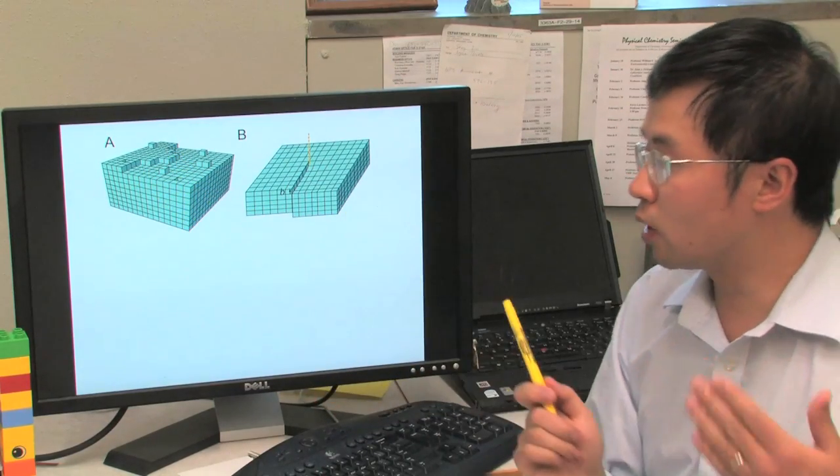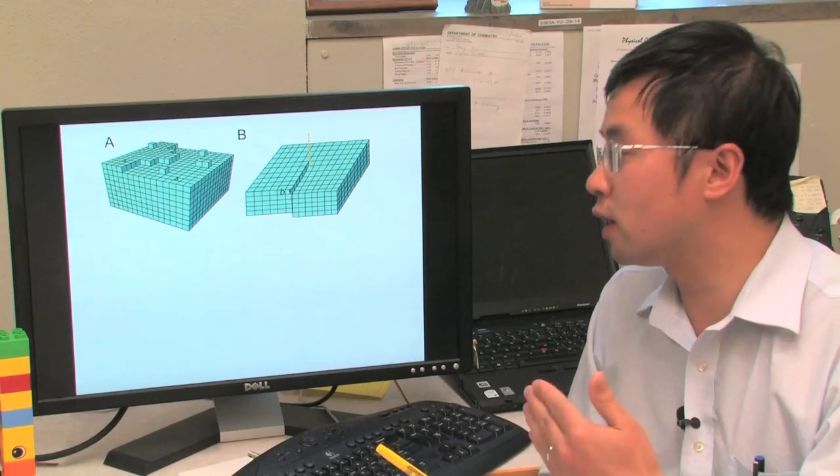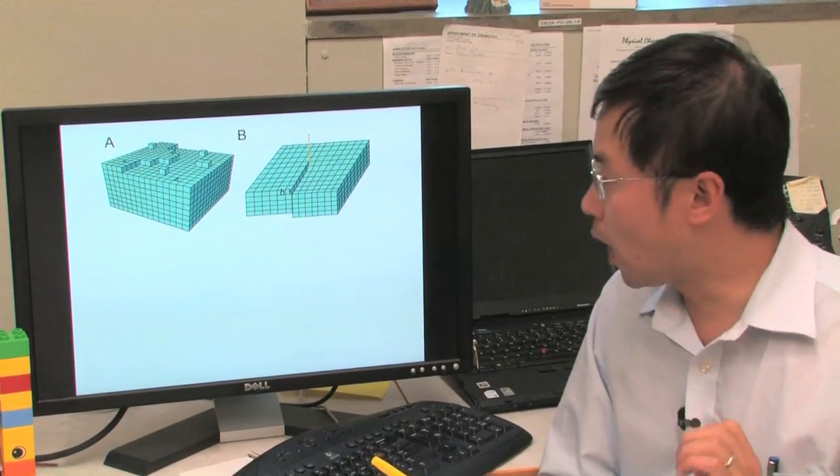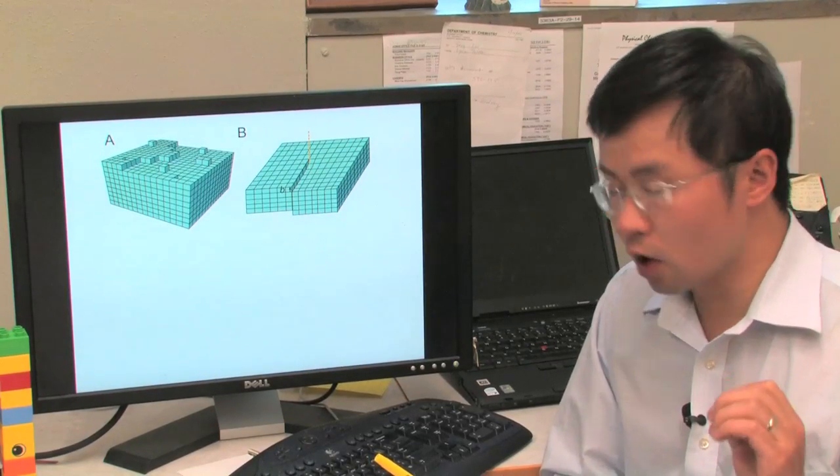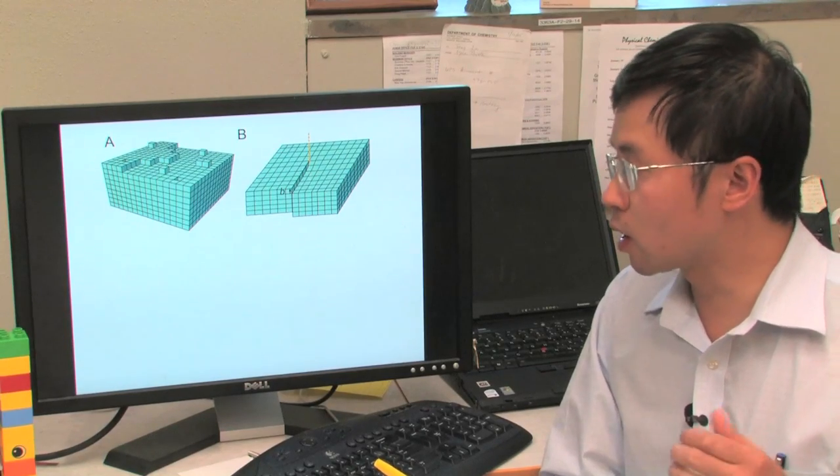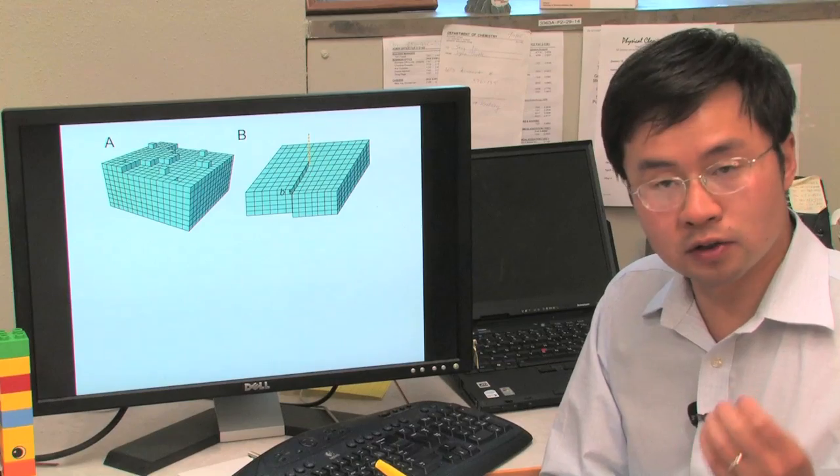However, when you finish the new layer from the beginning to the end, you have to nucleate an additional layer to enable this growth mode to happen. And that is actually the reason why it takes a lot more higher supersaturation to grow crystal in this way. Under the normal supersaturation we grow crystal with, the growth rate of layer-by-layer growth is fairly low.